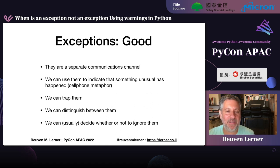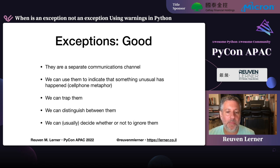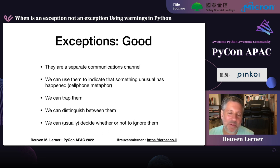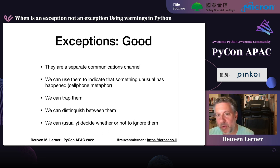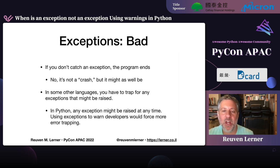Think of exceptions like a cell phone ringing during a face-to-face conversation. You stop what you're doing, deal with the incoming call, and then continue with your conversation. Exceptions say: you must stop what you're doing and deal with this new incoming message. The nice thing about exceptions is we can trap them with try/except, and we can distinguish between different kinds — trap a ZeroDivisionError but not an IndexError. But there are also some bad things: if you don't catch an exception, the program ends.